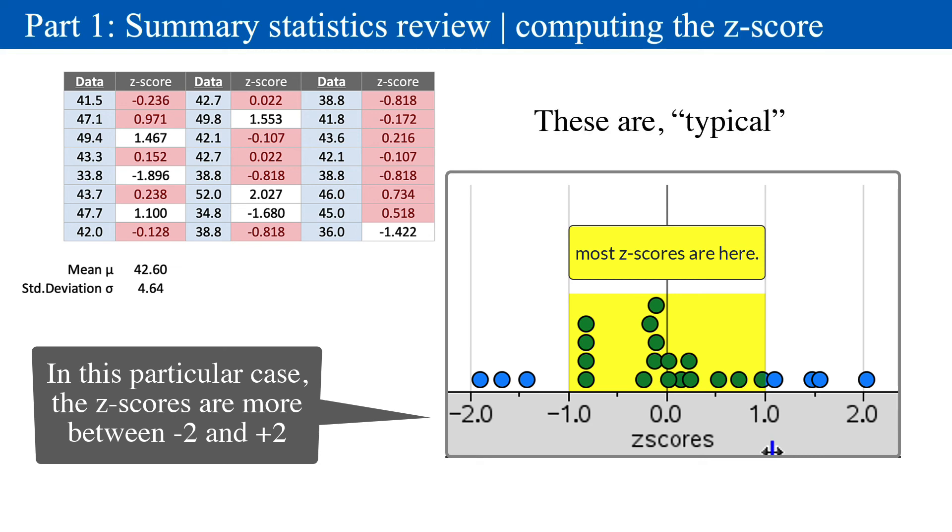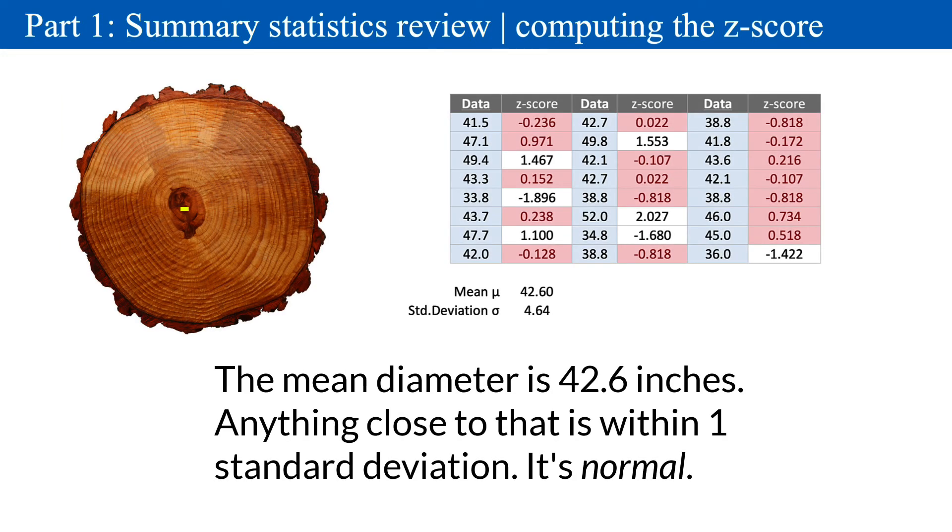These z-scores describe a data point that are somewhat close to the mean. In plain speak, they are, quote-unquote, typical or ordinary and reflect an ordinary tree diameter size of the greater population.